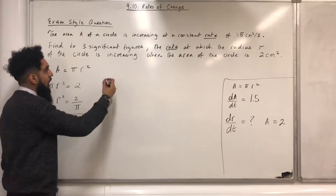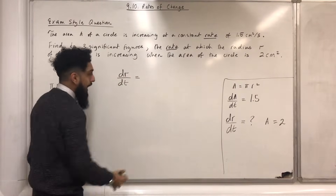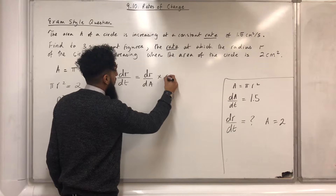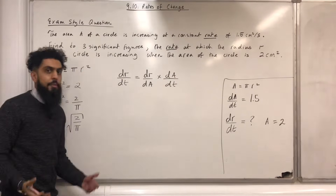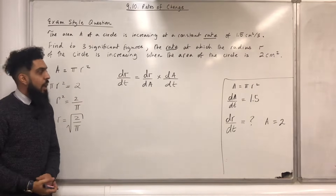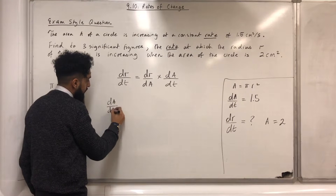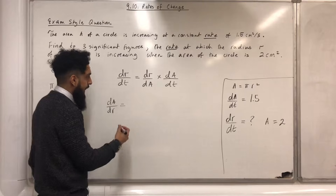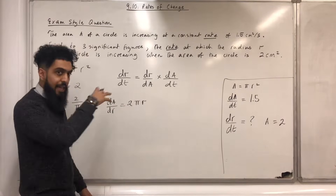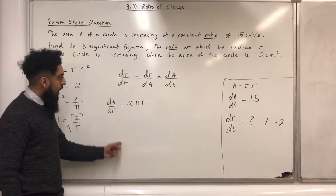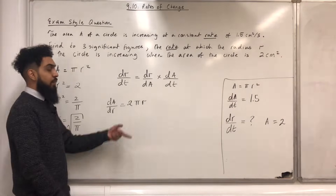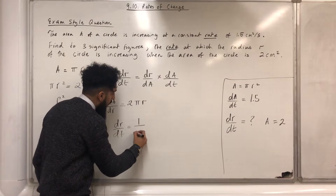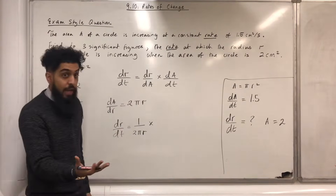To find dr over dt, I use the chain rule: dr over dt equals dr over dA multiplied by dA over dt. I have dA over dt already, so I need dr over dA. First, differentiating A equals pi r squared with respect to r gives dA over dr equals 2 pi r, so dr over dA equals 1 over 2 pi r. Therefore dr over dt equals 1 over 2 pi r, multiplied by dA over dt which is 1.5.